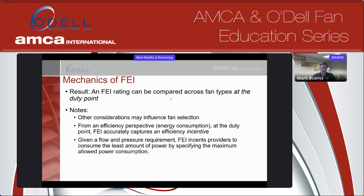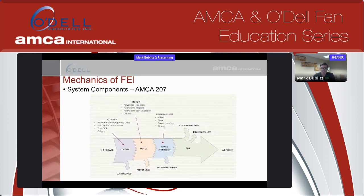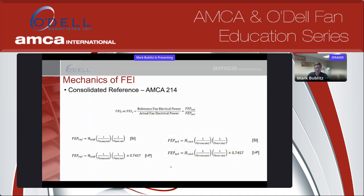Let's wrap some of this up. To get our FEI rating: input is fan electrical power, output is air power. Fan shaft power is in there but you don't need to worry about it directly — along the way there are losses. The fan industry historically focused only on what was going on in the impeller casing, but there's the transmission, the motor, and the controller, all of which are not 100% efficient. In AMCA 214, all these details are dealt with. The shaft power H is divided by the transmission efficiency and then by the motor efficiency to get to the FEP rating.